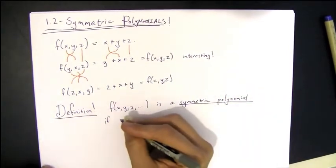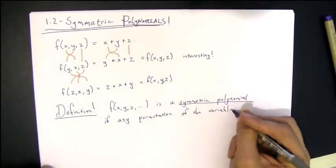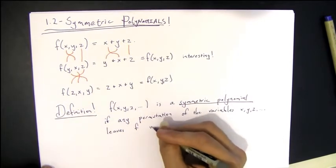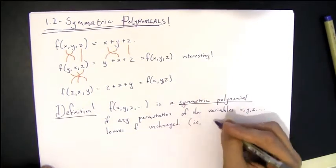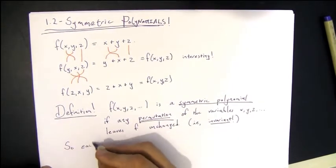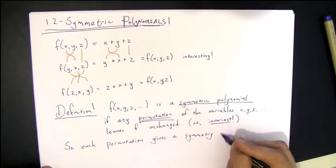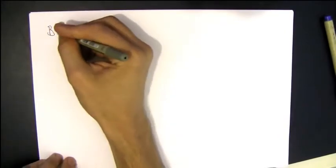So any polynomial in any number of variables we'll call symmetric if you can switch around the variables in any way and leave f unchanged. So in particular, it's going to be invariant under permutations. So then each permutation gives a symmetry of f. f is very, very symmetrical.